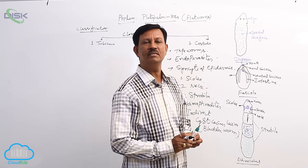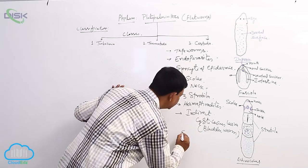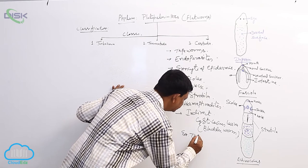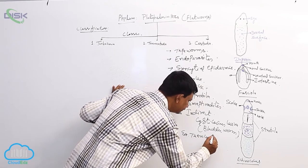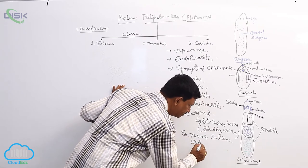Taenia solium has a life history with two hosts: the primary host is man, and the intermediate host is pig. Examples include Taenia solium and Echinococcus, the dog tapeworm.